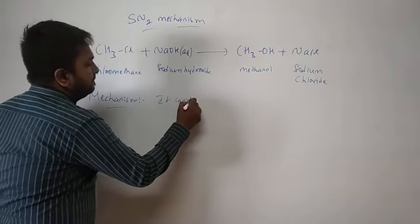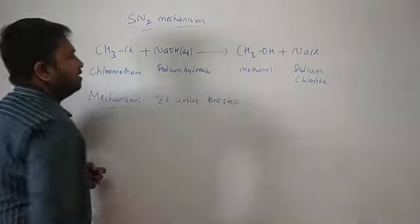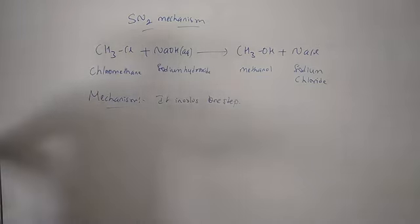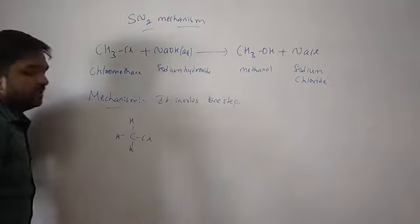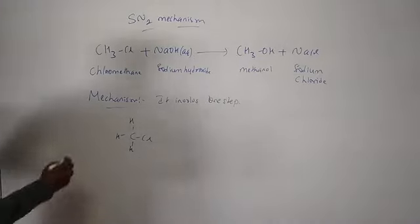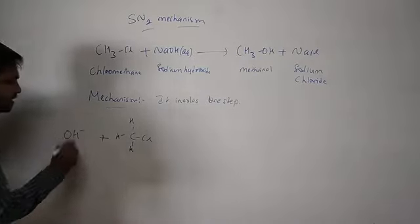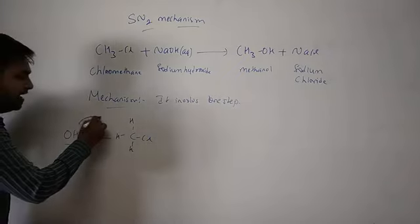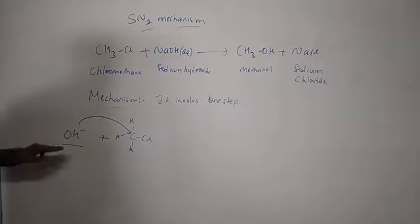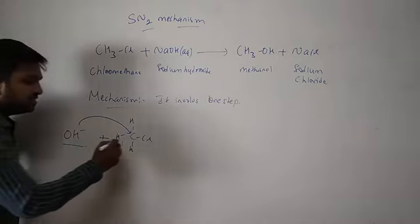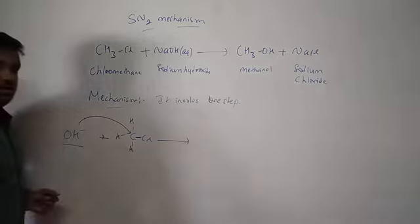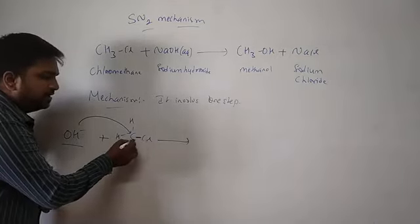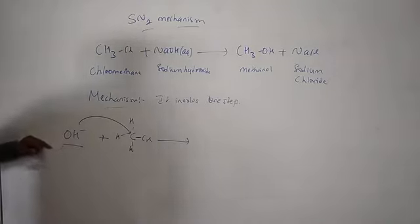This SN2 reaction involves only one step. We have chloromethane, and at the same time the nucleophile OH⁻ attacks the carbon. Please note: there is already a strong bond between carbon and chlorine. When this OH⁻ nucleophile attacks the carbon, the mechanism proceeds through a transition state.